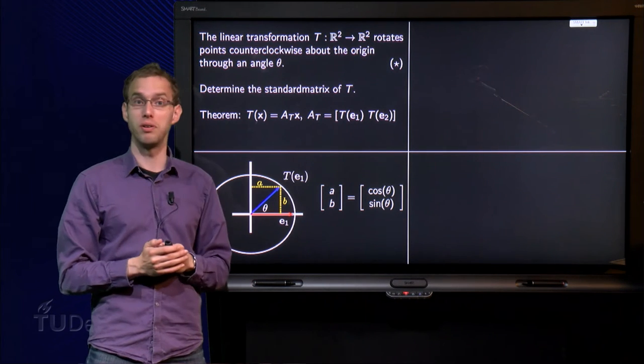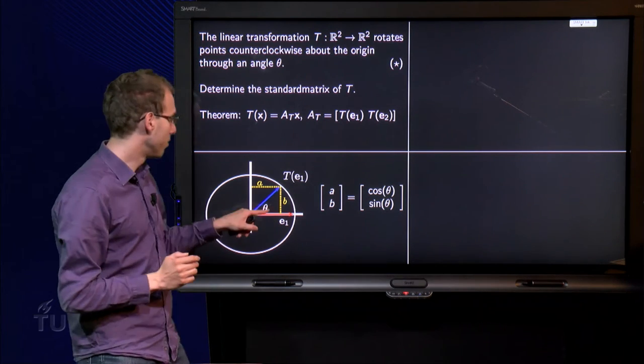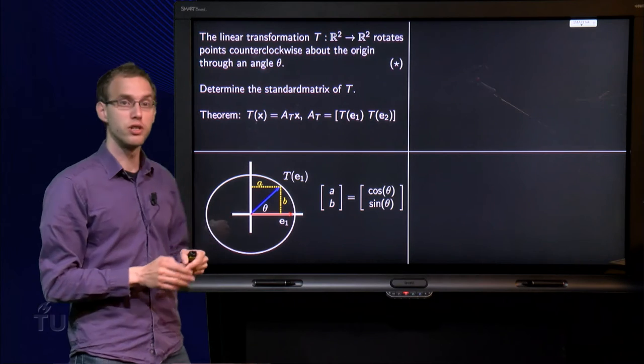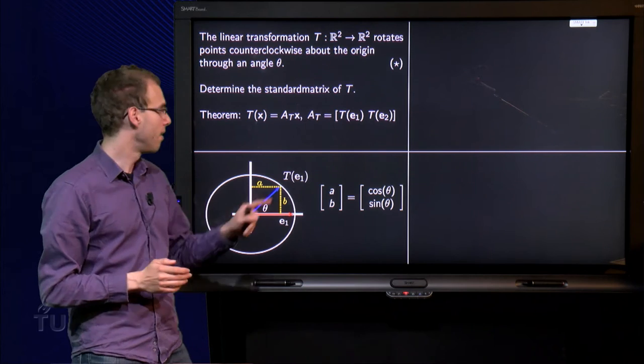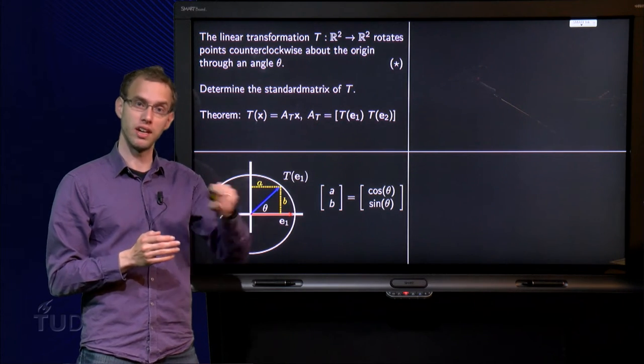So the x component of the blue vector equals cosine θ. Then the y component B, sine θ equals B over 1, so B equals sine θ. So T(e₁) equals [cos θ, sin θ].